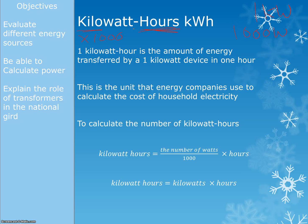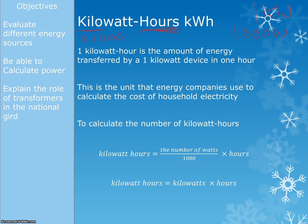One kilowatt hour is the amount of energy transferred by a one-kilowatt device in one hour. It's handy to remember that definition because they often ask for it. To calculate kilowatt hours: if given watts, divide by a thousand and multiply by the number of hours. If given kilowatts, it's simply kilowatts times hours. If you just look at the unit — kilowatt hours — kilowatts are next to hours, so you multiply them.